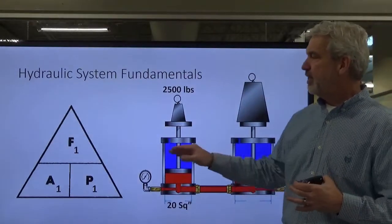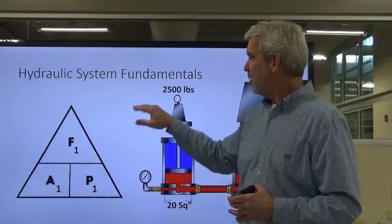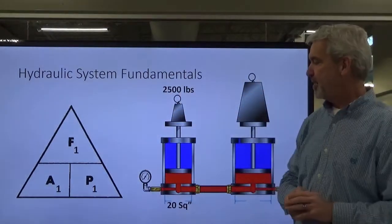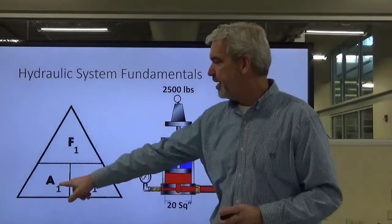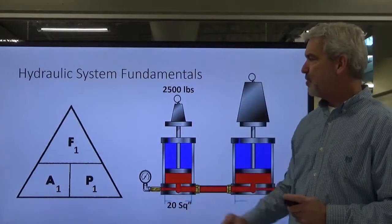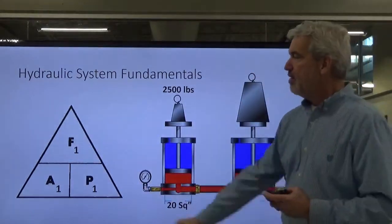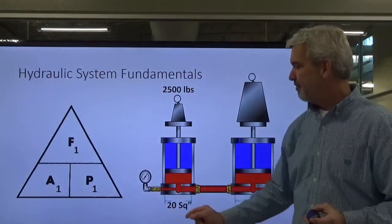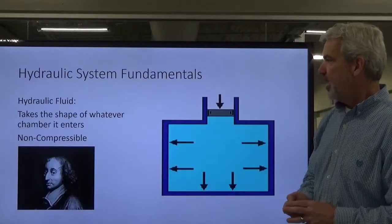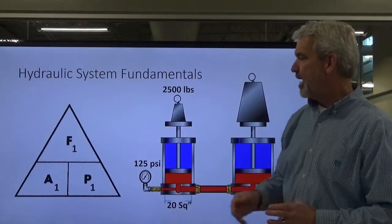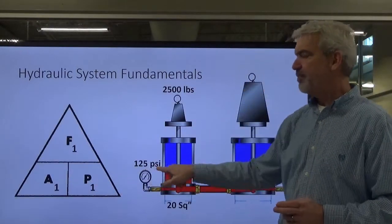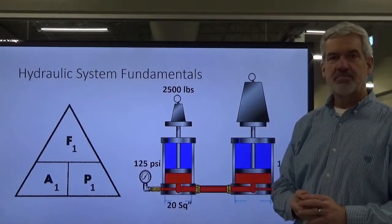Or we can call it the force of the first cylinder. It doesn't really matter. But this is technically how you would say F sub 1, A sub 1, and P sub 1. But the force of cylinder 1 is 2,500 pounds. We have an area of 20 square inches. Well, we've got these two, so we can find that one just like that. Force divided by our area, 2,500 divided by 20 square inches. And that gives us a pressure of 125 pounds per square inch.